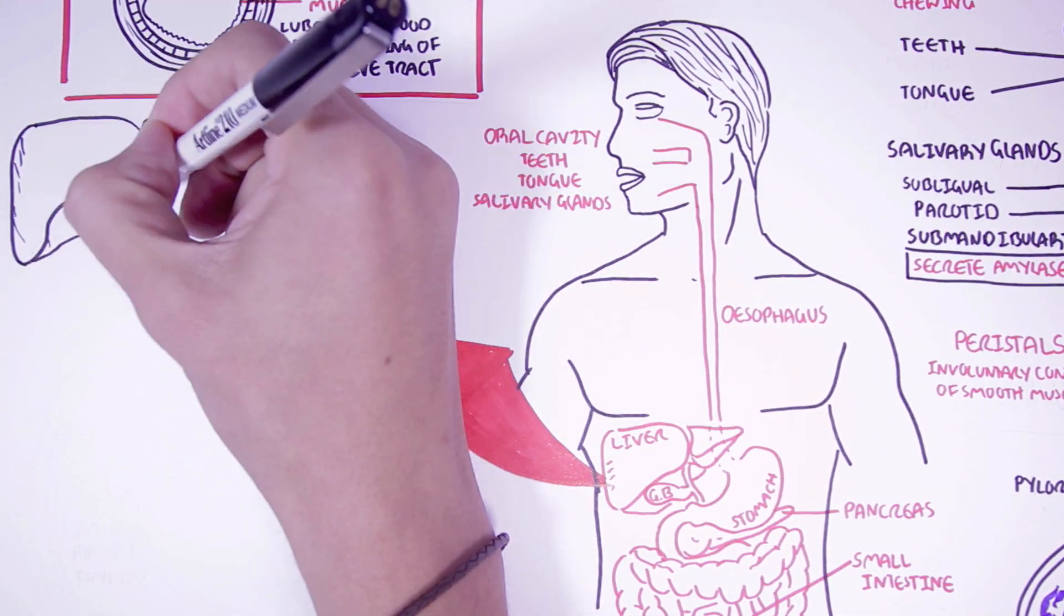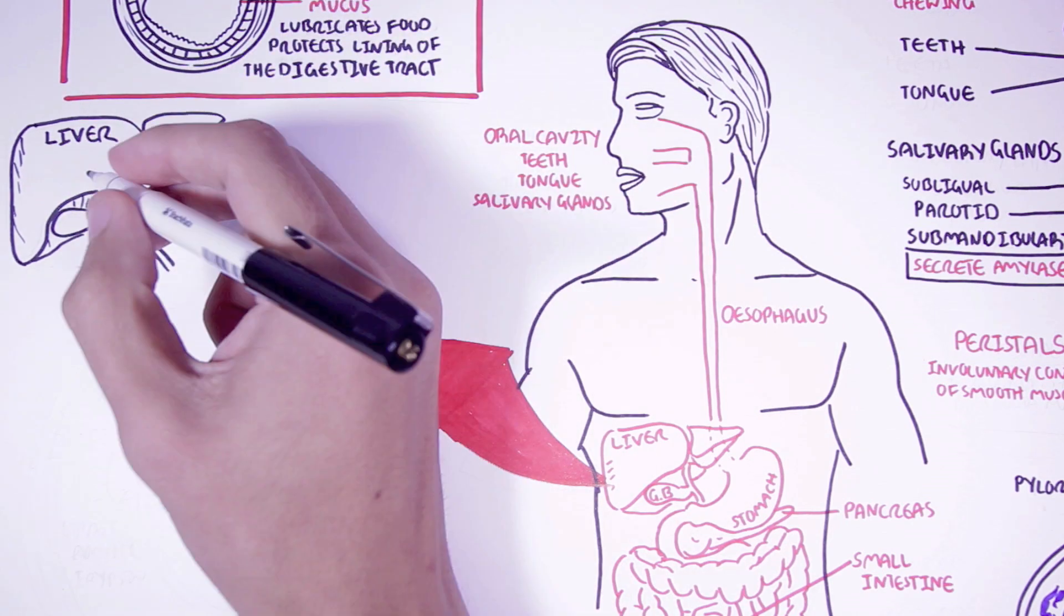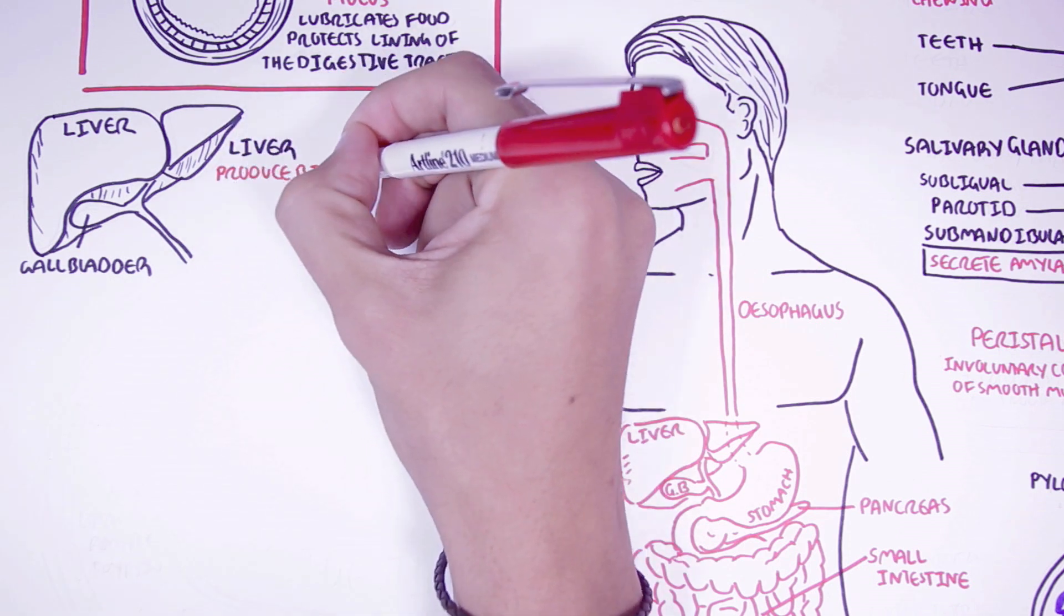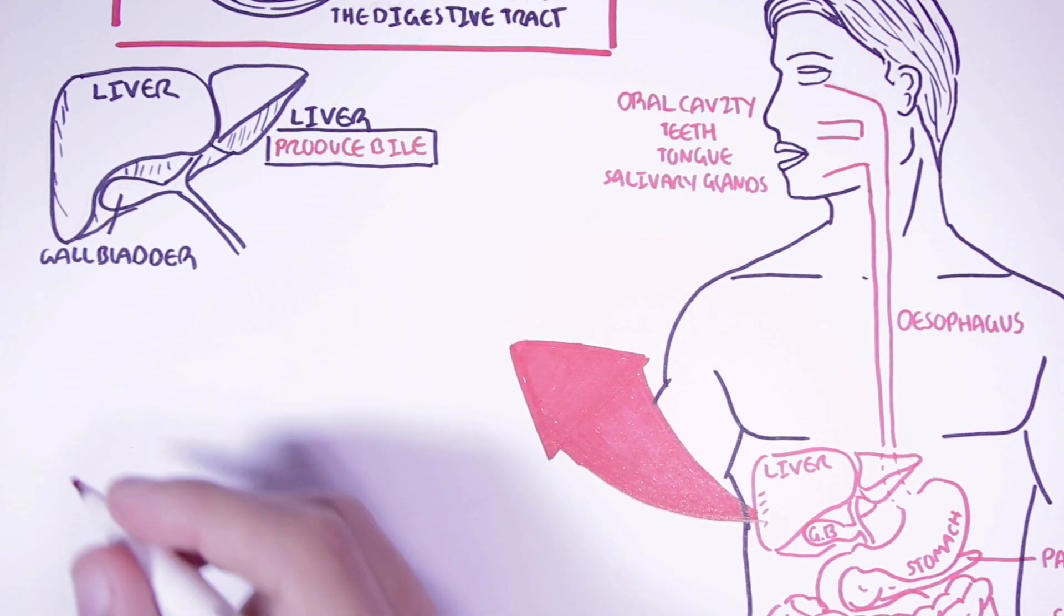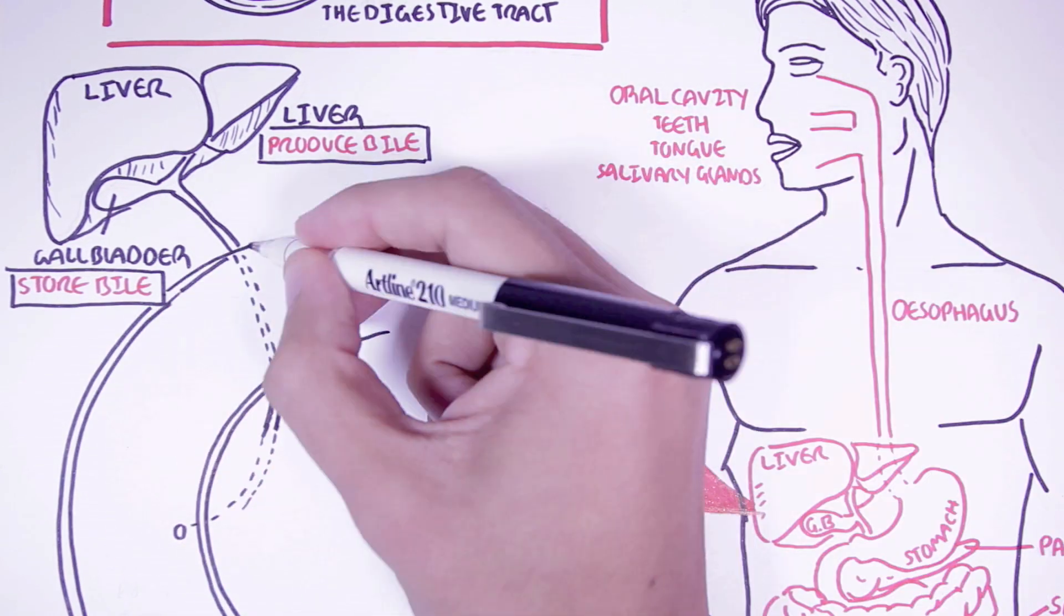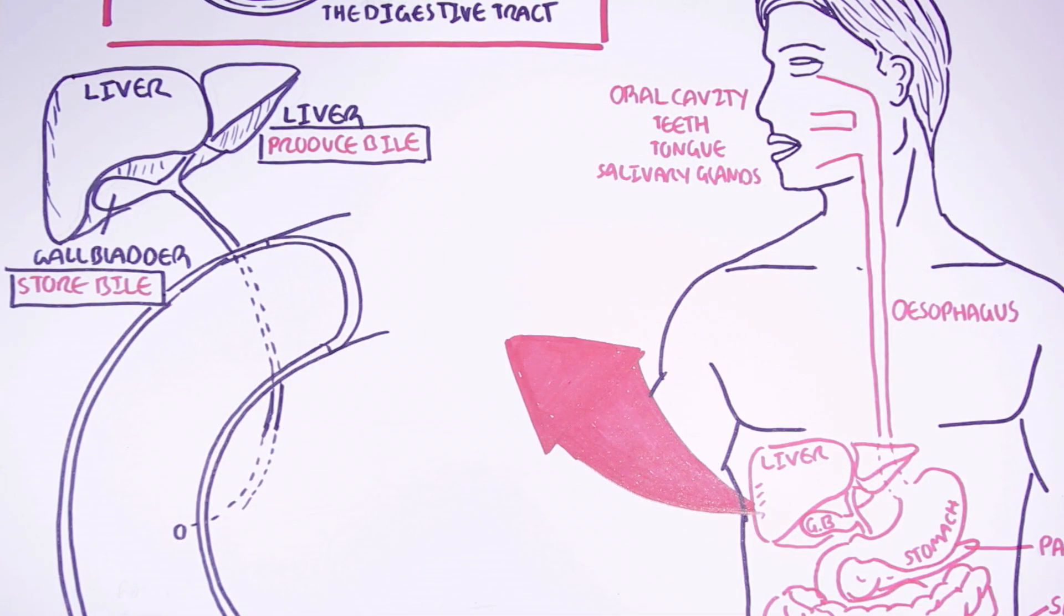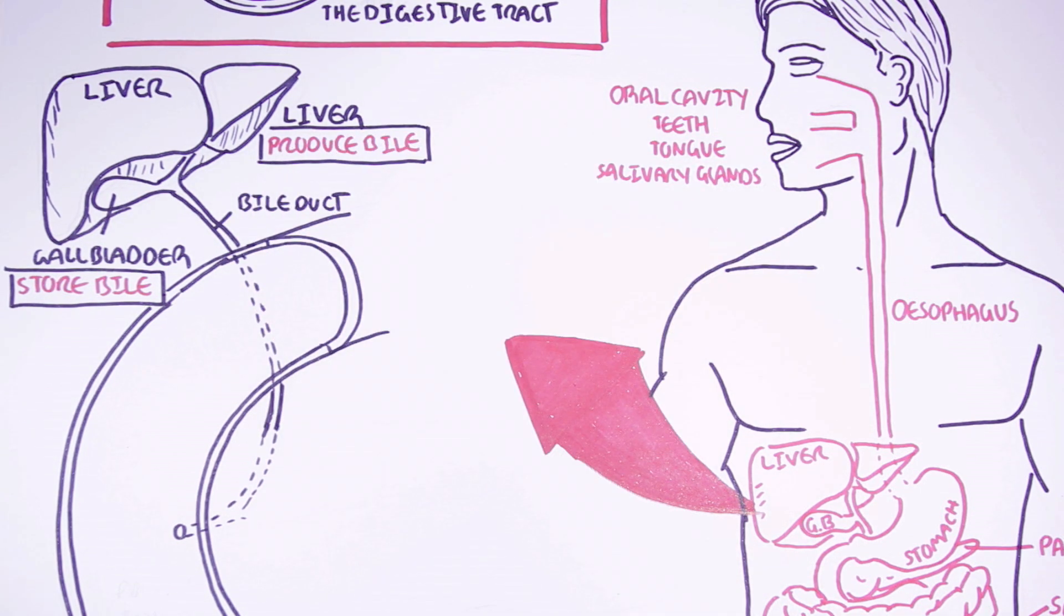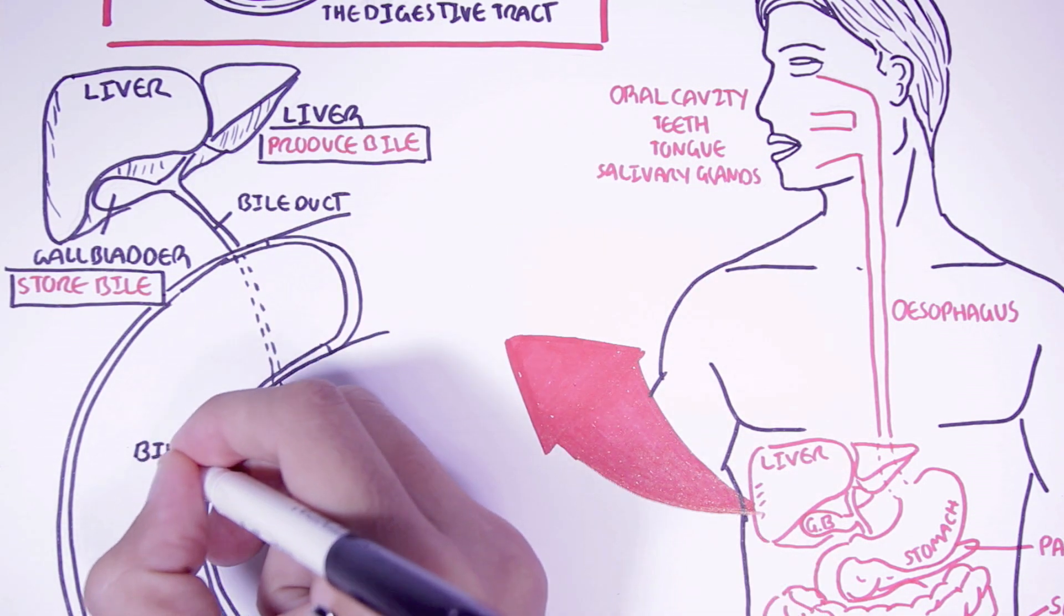So here we are zooming into the liver and the gallbladder. The liver produces bile, which has a critical role in lipid digestion. The gallbladder stores the bile. And when needed, the gallbladder will contract and release the bile into the small intestine. So bile will enter the small intestine through the bile duct.